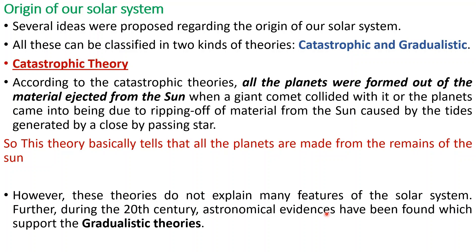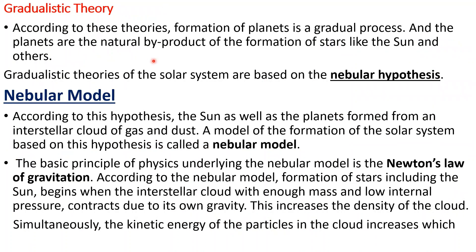However, these theories do not explain many features of our solar system, and further during the 20th century astronomical evidences have been found which support the gradualistic theory. According to this theory, formation of planets is a gradual and continuous process, and the planets are the natural by-product of the formation of stars like the sun and others.